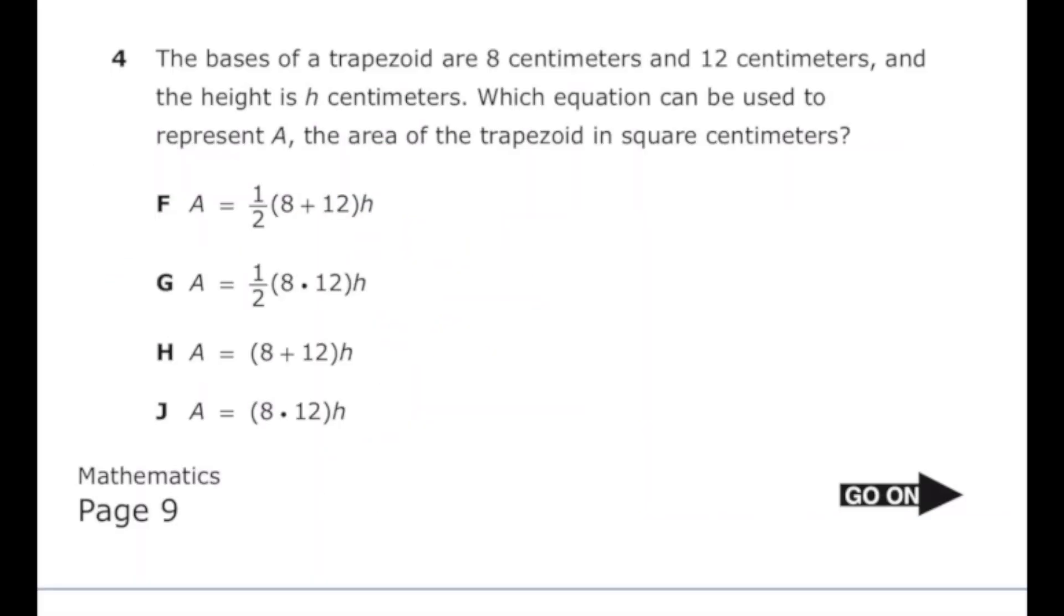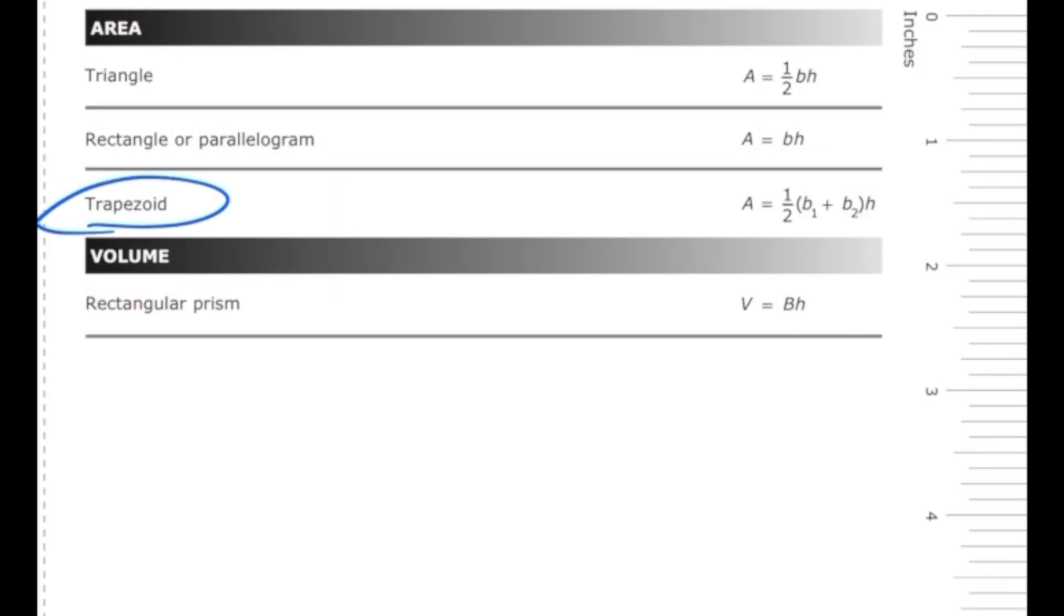Number four from the 2022 sixth grade math STAR test. The bases of a trapezoid are 8 centimeters and 12 centimeters, and the height is h centimeters. Which equation can be used to represent a, the area of the trapezoid in square centimeters? If you're not sure what the formula is for area of a trapezoid, we can just check our reference sheet, which you will have on the STAR test. When we look at that, we're going to see that the area of a trapezoid is equal to 1/2 times parentheses base 1 plus base 2 times height.